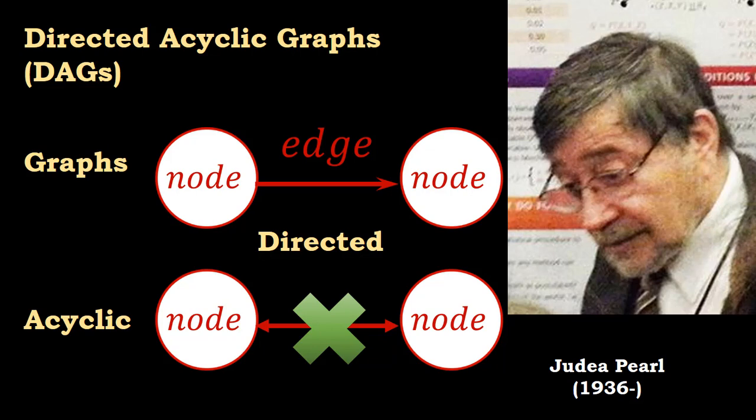Judea Pearl introduced the use of directed acyclic graphs to represent causal models of reality. Graphs are mathematical structures that instead of using formulas, they use graphics. They have two elements: nodes and edges.